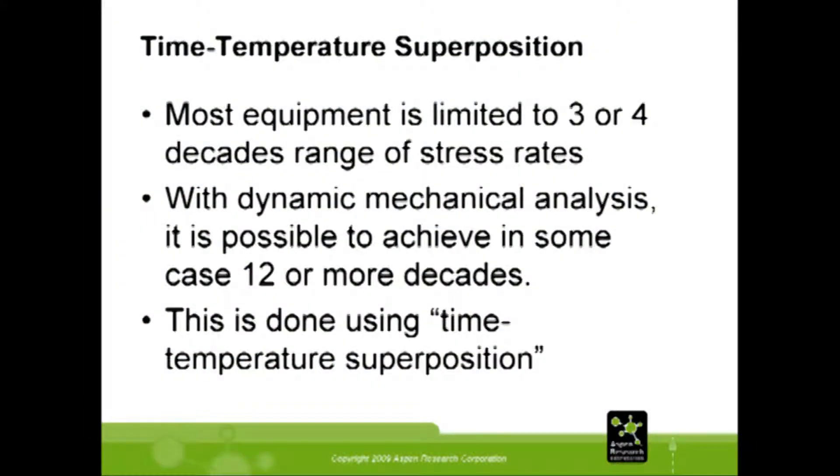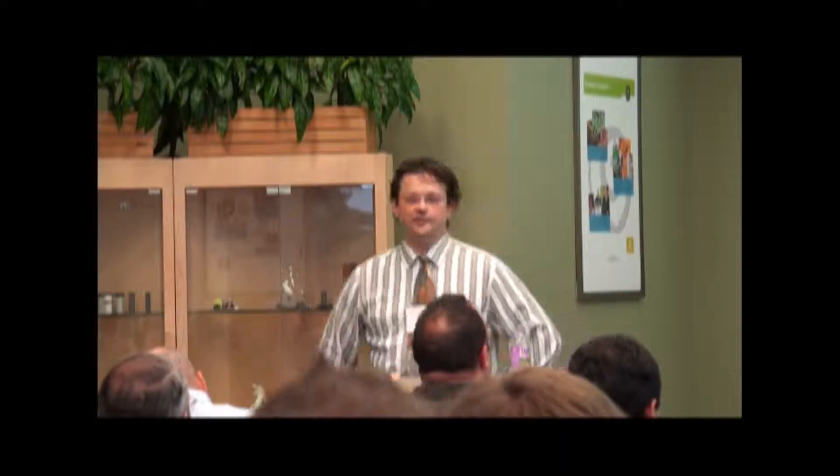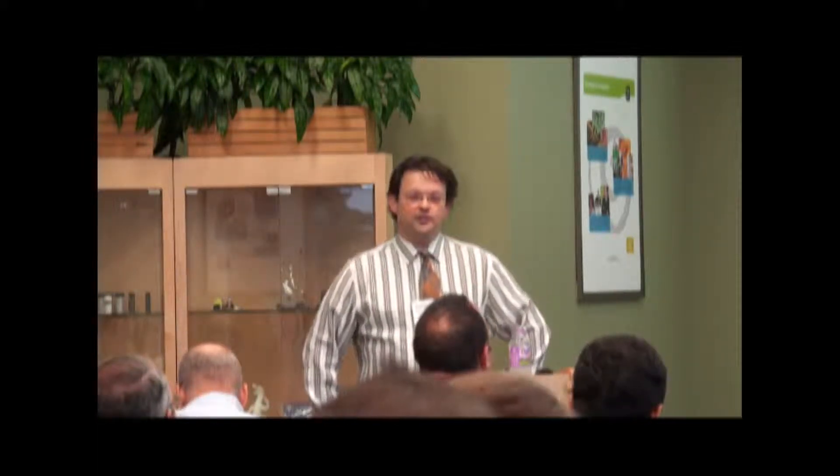The reason I did this is because most equipment is limited to three or four orders of magnitude for shear rate. The shear rate applied was between 0.1 hertz and 10 hertz, so we only got two orders of magnitude. We can go a little lower, but that takes longer because if you're putting an oscillation on you have to wait the inverse of the frequency — going to 0.02 hertz means it takes over 100 seconds for each measurement. With dynamic mechanical analysis, you can use mathematical manipulations, in some cases expanding the range to 12 or more decades of shear rate. This is done with the technique known as time-temperature superposition.